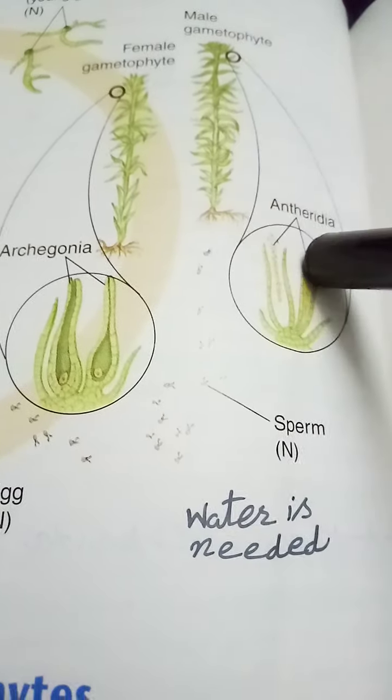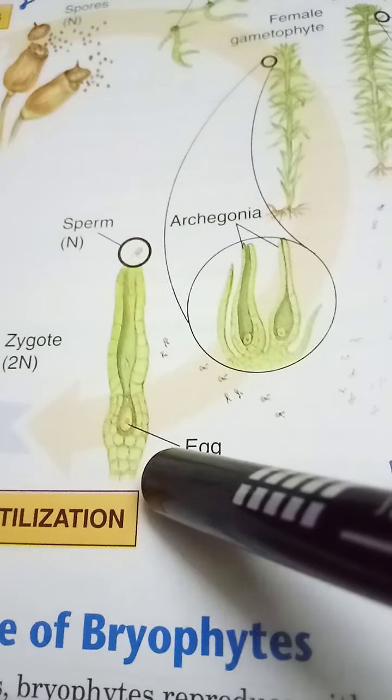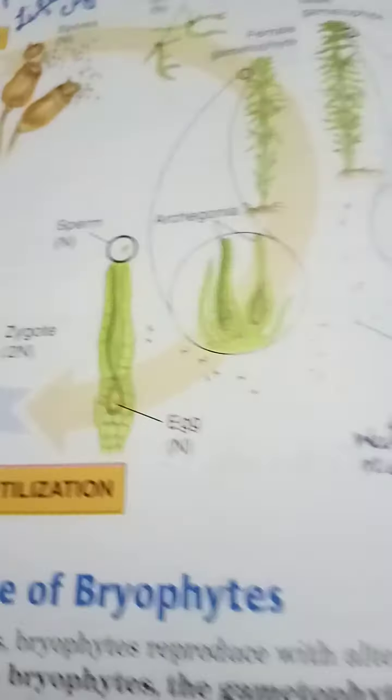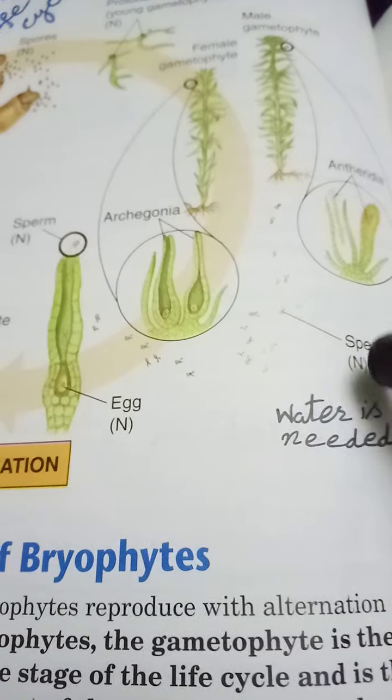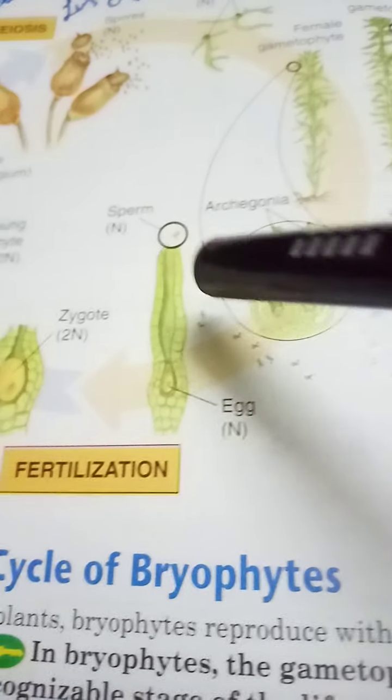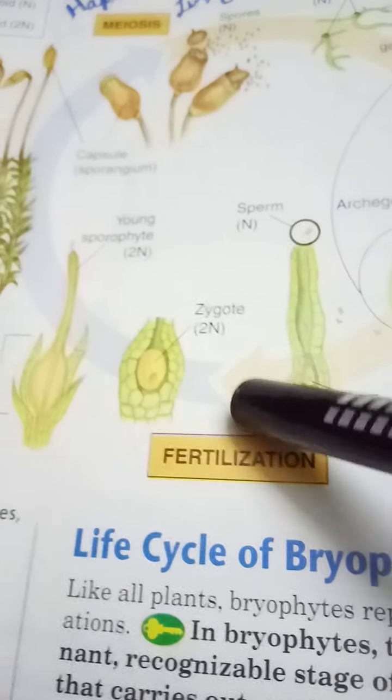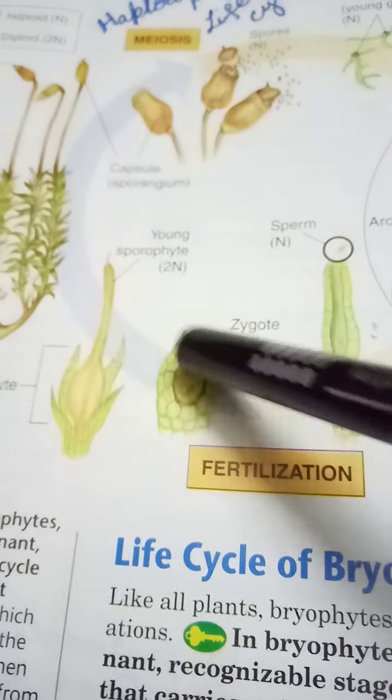The male sex organ is known as antheridia, in which sperms develop, and the female sex organ is known as archegonia, in which the egg develops. Water is needed for fertilization — sperm swim towards the egg. After fertilization, the fertilized egg develops into the sporophytic phase, and the sporophytic phase again develops into the gametophytic phase, and this cycle continues.